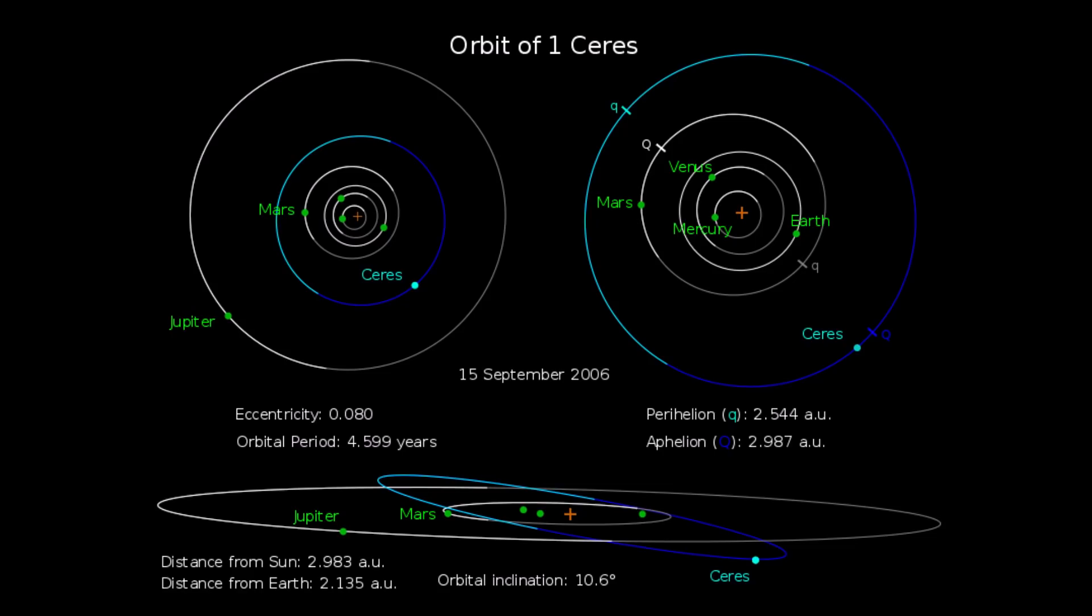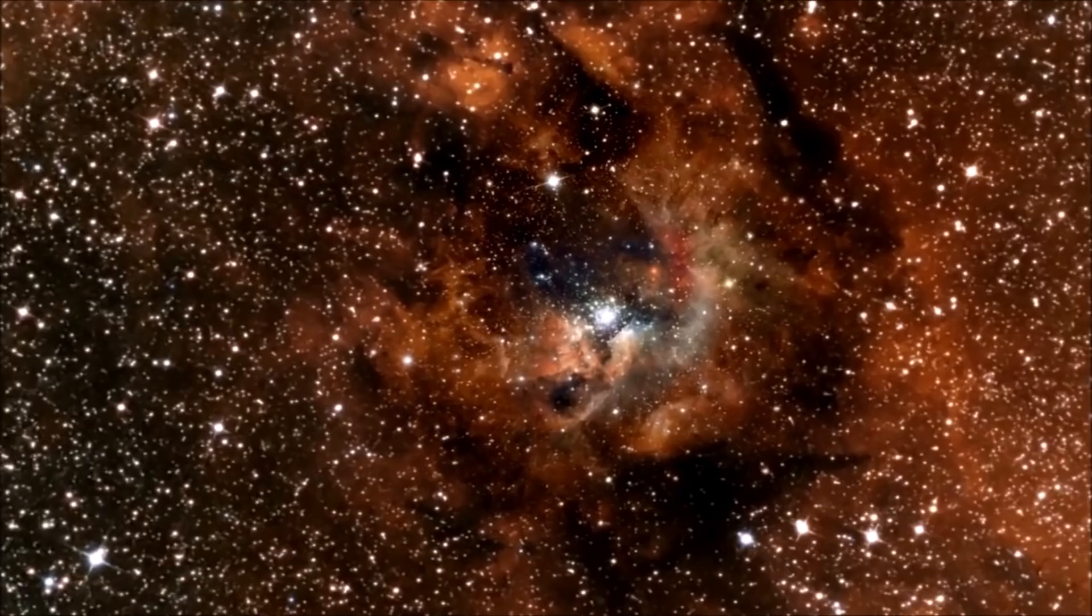Ceres' origin is still up for debate. We predict it to be roughly four and a half billion years old, and we theorize it might be a surviving protoplanet. A protoplanet, also known as a planetary embryo, is an asteroid-like body that rams into other embryo planets to form terrestrial planets.